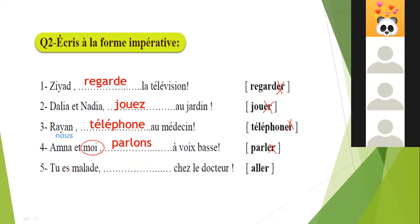Did you all answer? Who didn't answer? Najwa didn't answer. Najwa, verb aller with tu — can you tell me the answer? Come on, my dear, we're running out of time. It will be — verb aller with tu will be va.